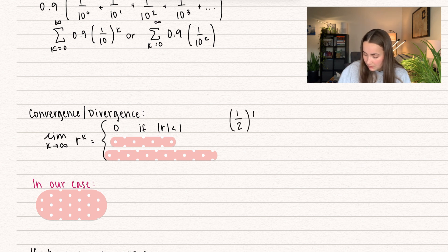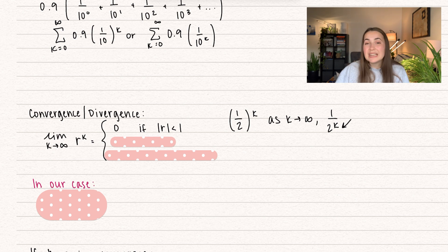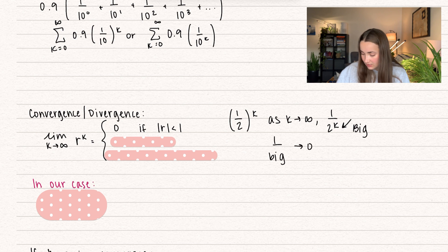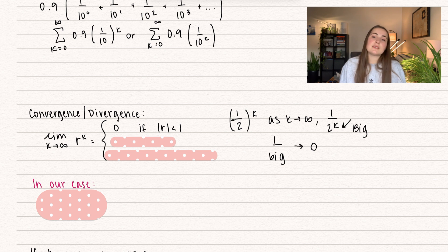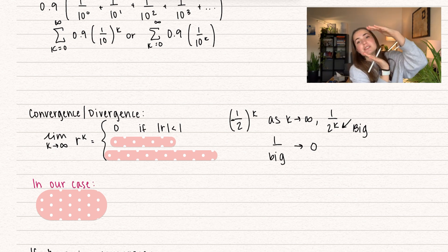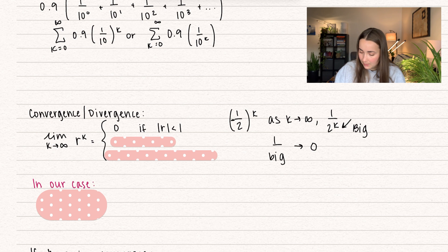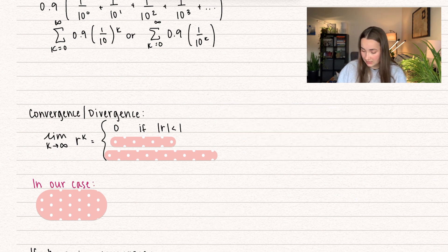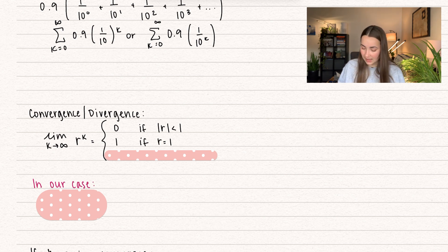Let's take an example: say we have 1 over 2 to the power of k. As k goes to infinity, the denominator gets really, really big, and 1 divided by a big number is just going to go to 0. This could also be negative — even if it's oscillating between positive and negative, on either side of the oscillations it's going to go to 0. That's what happens when the common ratio is strictly less than 1. And then we have when the common ratio is equal to 1 — naturally, 1 to the k is going to go to 1.